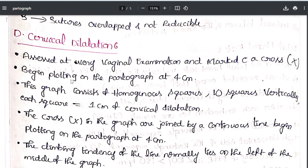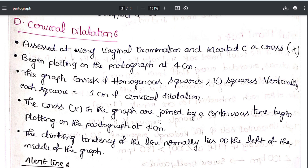The next component is cervical dilatation, assessed at every vaginal examination and marked with a cross (X). Begin plotting on the partograph at 4 cm, when the active phase of labor starts. The graph consists of squares — 10 squares vertically, each square equal to 1 cm of dilatation. So 10 squares vertically represent the full 10 cm of cervical dilatation.